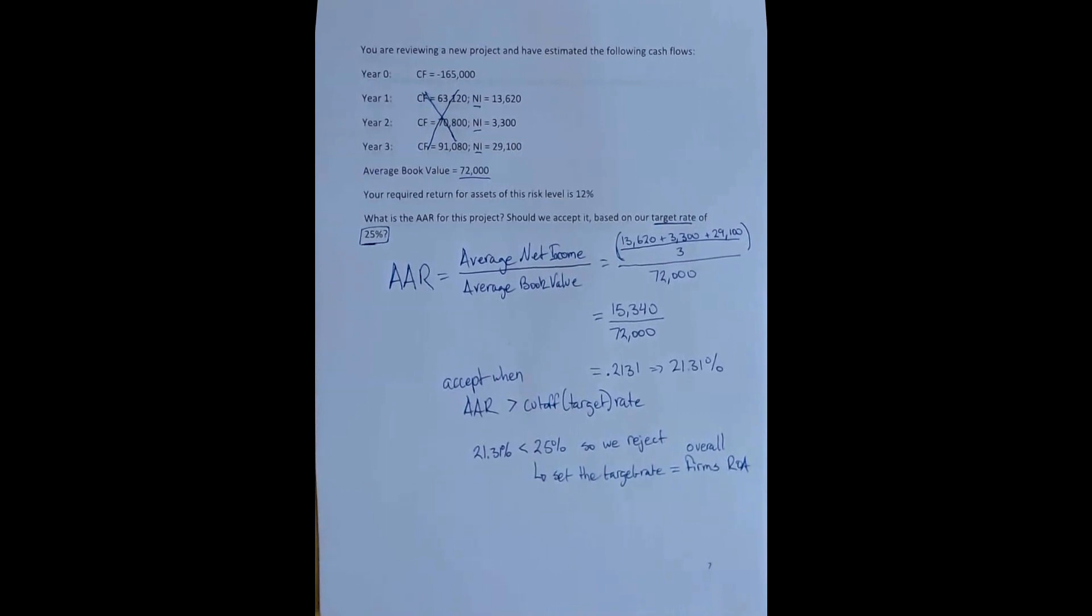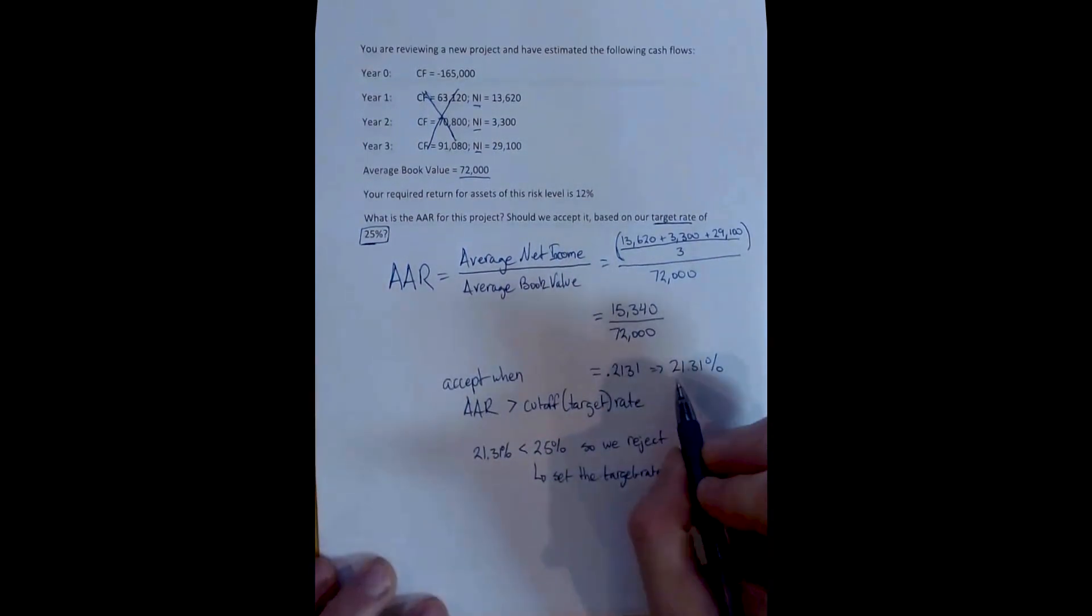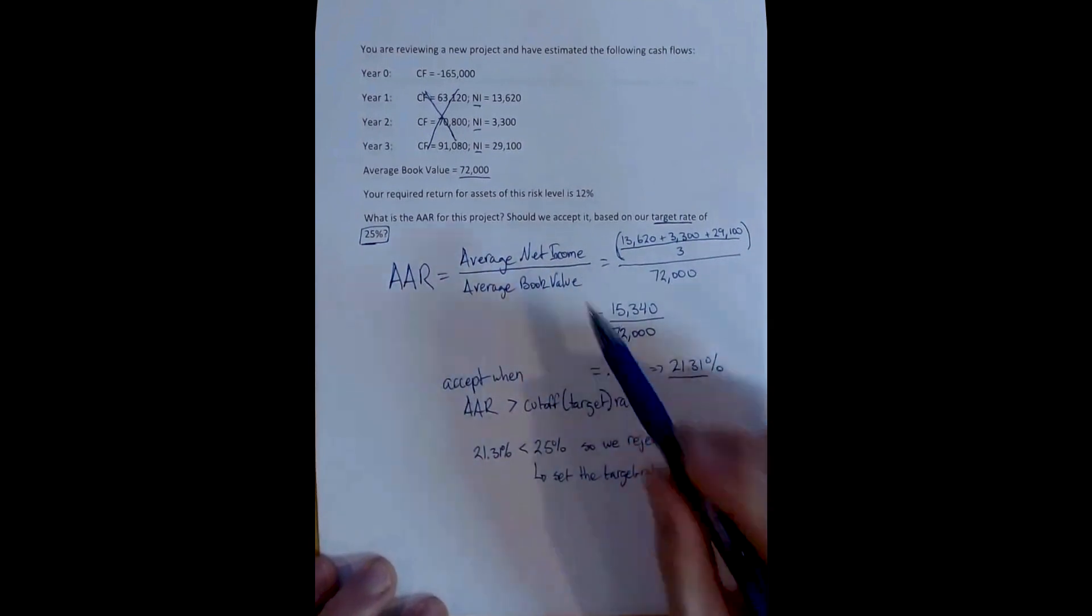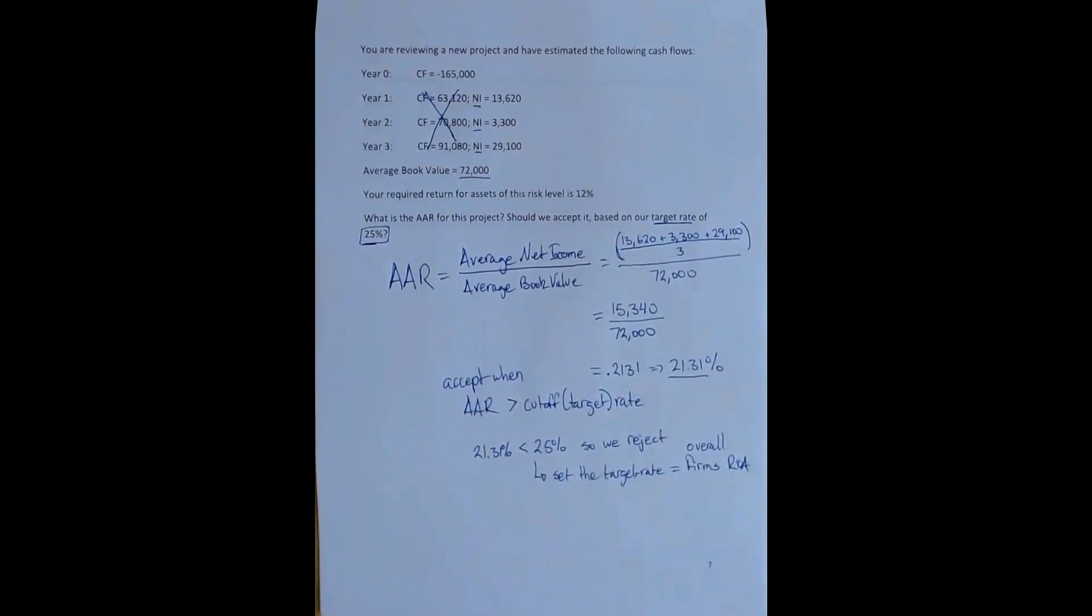On the other hand, for a firm with a very high ROA, it can make it very difficult to accept a project. Notice that here, 21% return on assets for the project is pretty incredible. And again, I've made this cutoff rate high just to illustrate some of the problems that we can have, which is that we reject an, again, objectively good project.